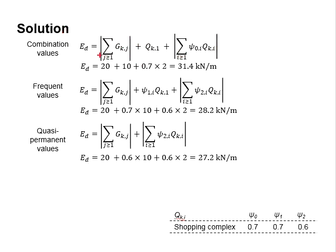you will obtain the design value for the combination equals to 31.4 kN per meter. This is basically multiplying the accompanying variable with psi nought.